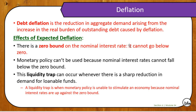Deflation is really bad for the economy. Debt deflation is a reduction in aggregate demand arising from an increase in the real burden of outstanding debt caused by deflation. If our money becomes worth more suddenly, the amount we owe suddenly becomes more — so our $22 trillion debt would seem like a lot more. There is also a zero bound on the nominal interest rate, meaning it cannot go below zero. A liquidity trap is when monetary policy is unable to stimulate an economy because nominal interest rates are up against the zero bound — if interest rates are at zero, the Fed cannot do much more to get the economy going.